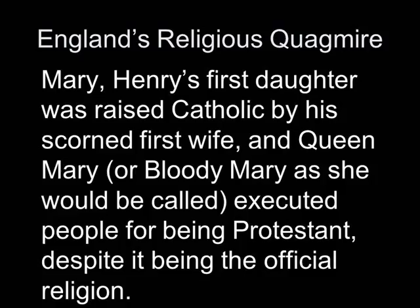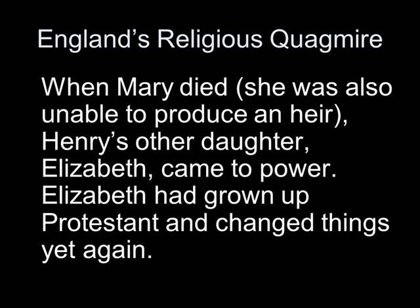Mary, Henry's first daughter, was raised Catholic by his first wife, and she did not like Protestants. So Queen Mary, or Bloody Mary as she was called, executed people simply for being Protestant, despite the fact that most people in England were Protestant. When Mary died, she was also unable to produce an heir. So Henry's other daughter, Elizabeth, came to power, and Elizabeth had grown up Protestant, and that changed things yet again.